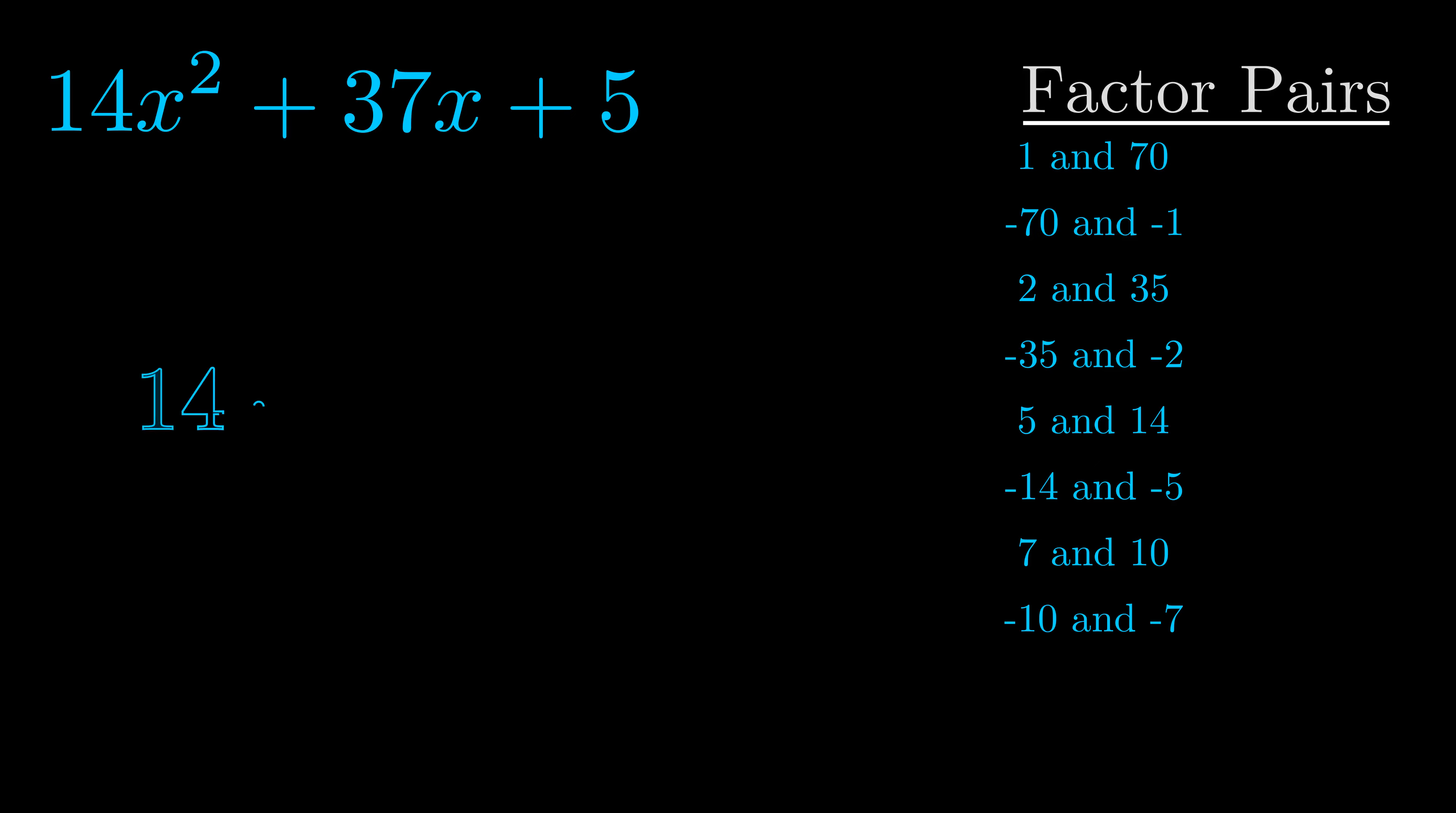The b-value is the coefficient on the x term. That's the middle term, the one that we haven't done anything with yet. And really this is the only factor pair that we need.